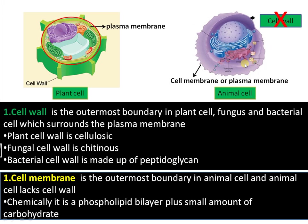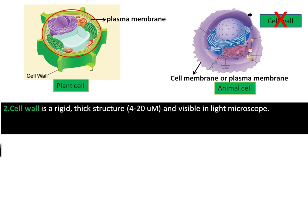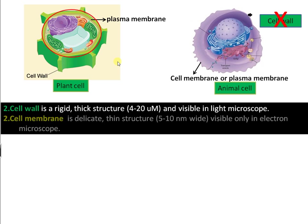Absence of cell wall actually allows animal cells to move and search for food. Now the second difference: cell wall is a very thick, rigid structure that is visible under the light microscope. Whereas cell membrane is a very thin, delicate, fine structure that is visible only under the electron microscope.